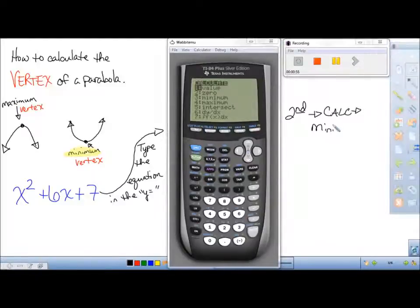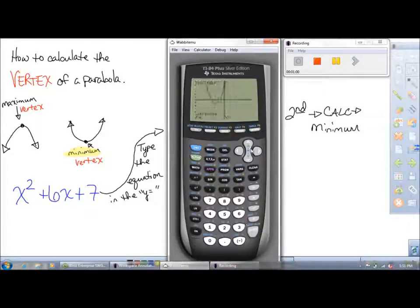Just to reiterate here, second calc and minimum - you can either hit the number three or you can scroll down to it and hit enter. To calculate the minimum, you have to get to the left bound of where you think the minimum is. So get to the left a little bit, hit enter. Get to the right a little bit of where you think it's at and hit enter.